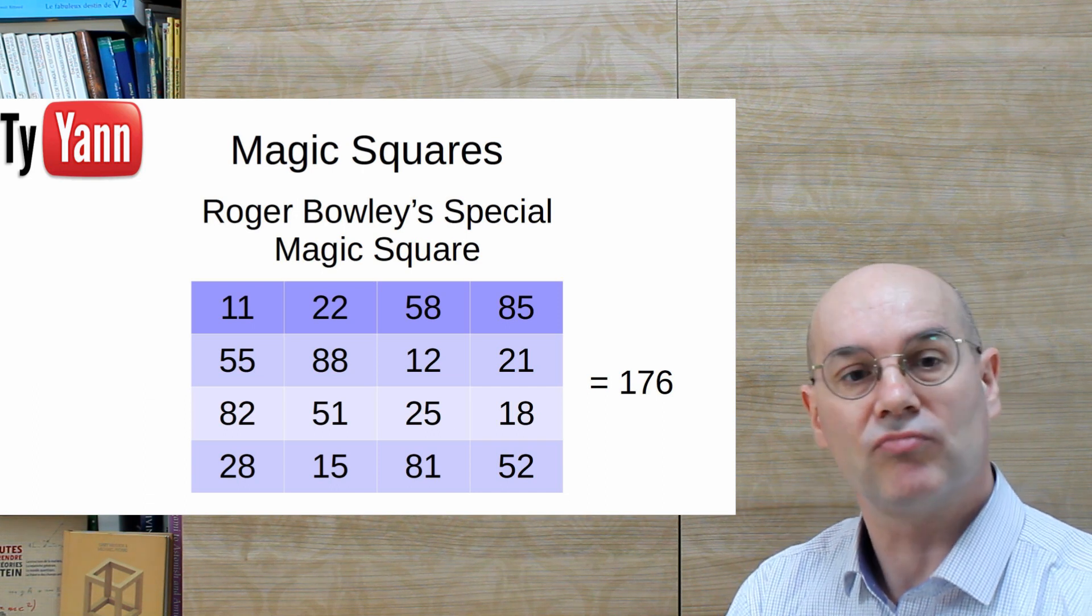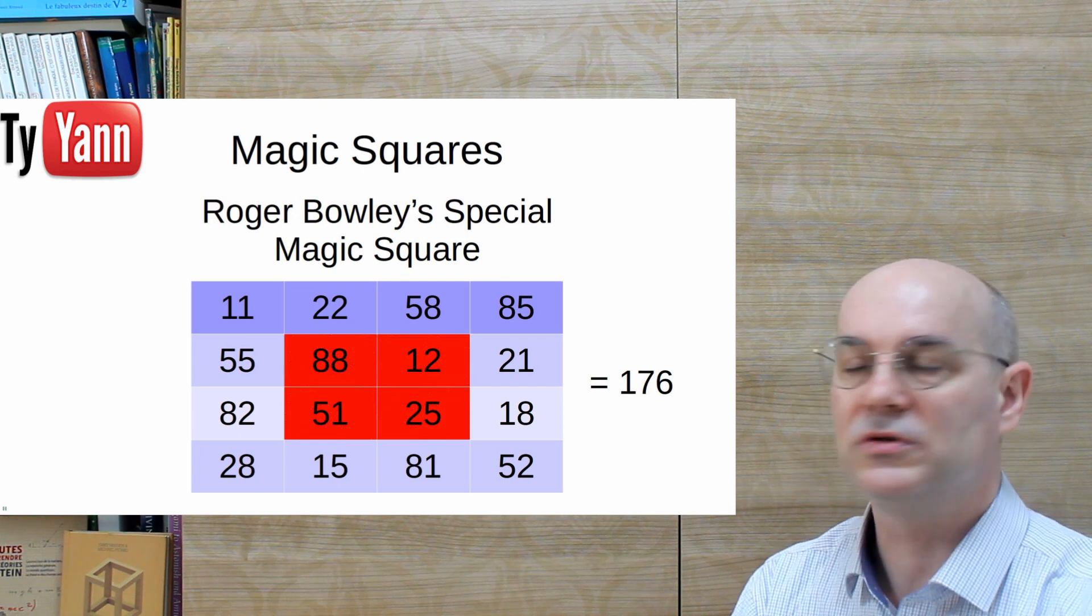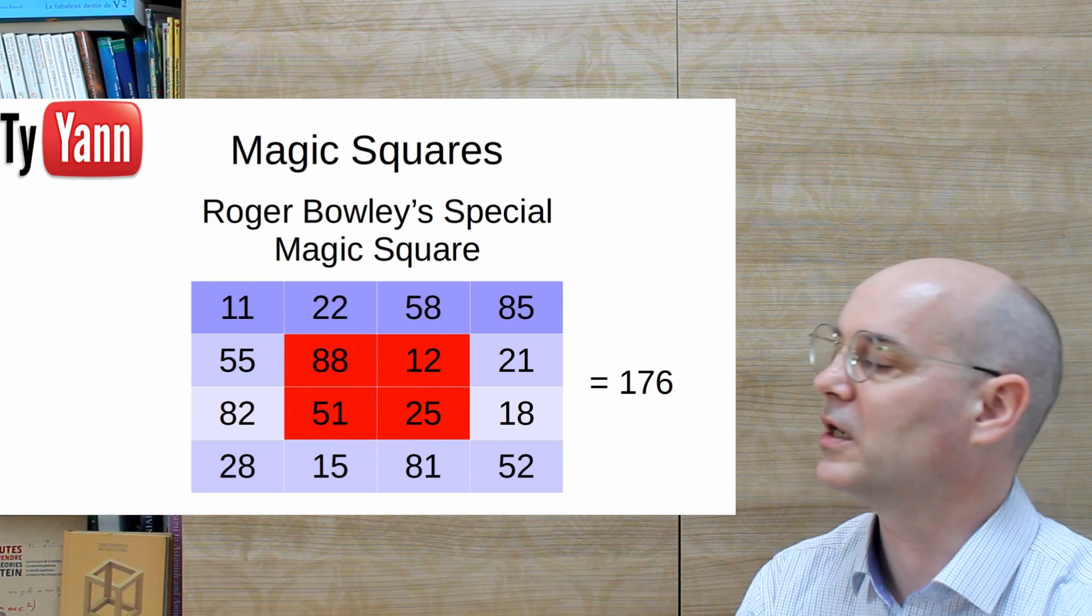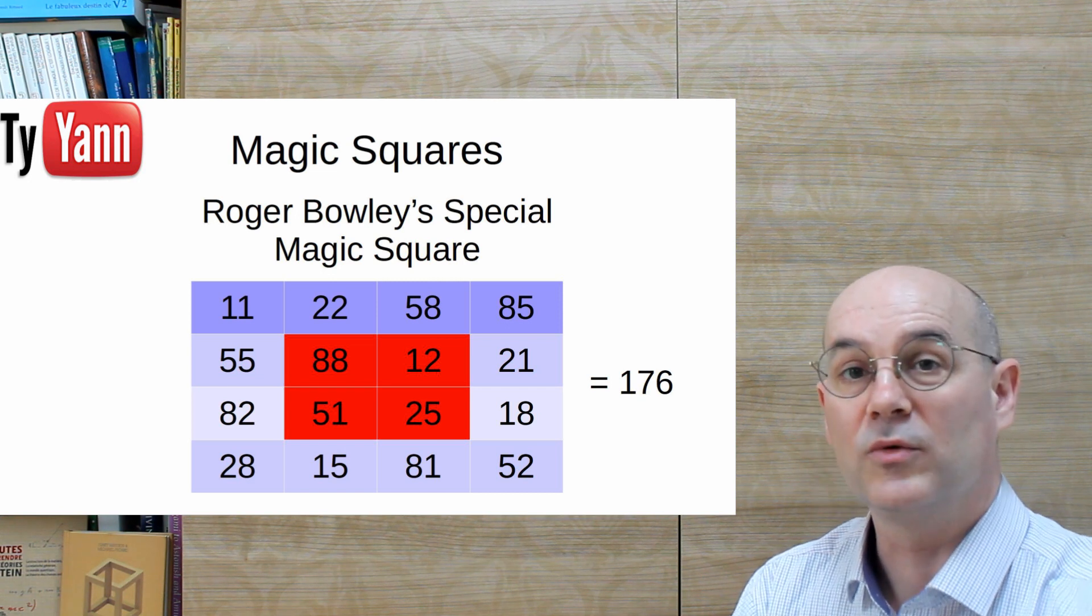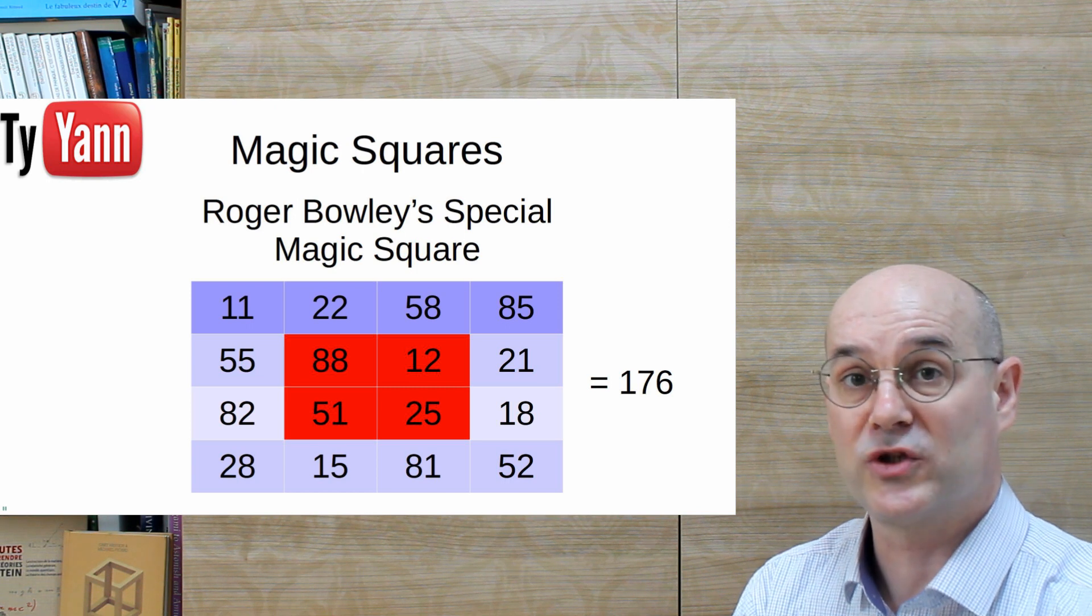But already, we have the center, which is also equal to the magic constant. Okay, cool. And when it gets interesting, when you write the numbers like so. Because then you can mirror it and you get a new square.